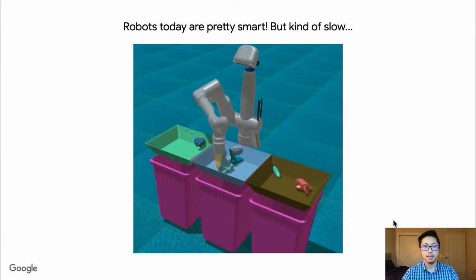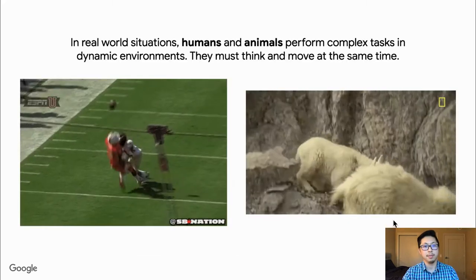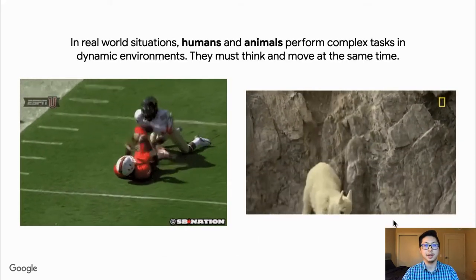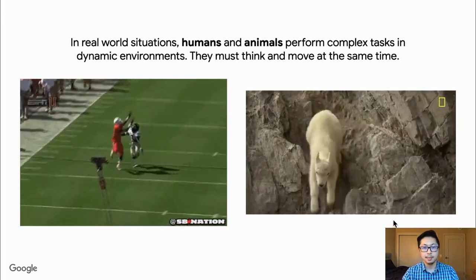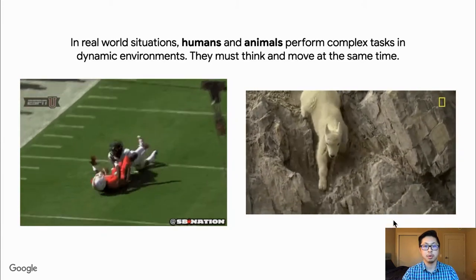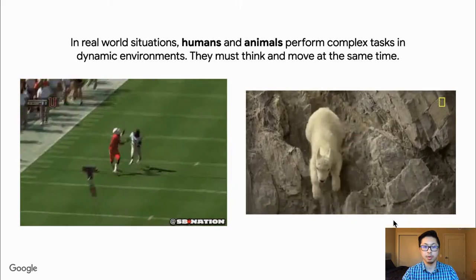However, in many common scenarios, robotic agents operate very slowly because they must pause to observe the world and contemplate between every single action. However, in the real world, the environment is continuously changing. Humans and animals operate in dynamic environments, but we don't have the luxury of pausing the world to consider what to do next.